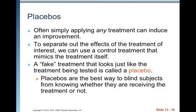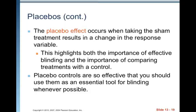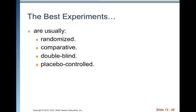Placebos: simply applying any treatment can induce an improvement. To separate out the effects of the treatment of interest, we use a control treatment that mimics the treatment itself. A fake treatment that looks just like the treatment being tested is called a placebo — often just sugar pills designed to look exactly like the actual medicine so subjects wouldn't know the difference. The placebo effect occurs when taking the sham treatment results in a change in the response variable, highlighting the importance of effective blinding and comparing treatments with a control. The best experiments are usually randomized, comparative, double-blind, and placebo-controlled.